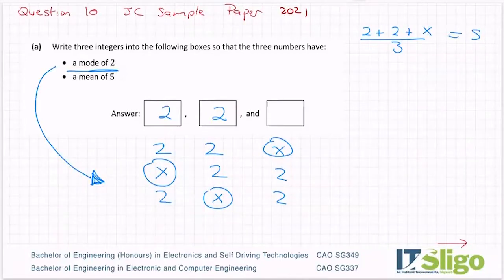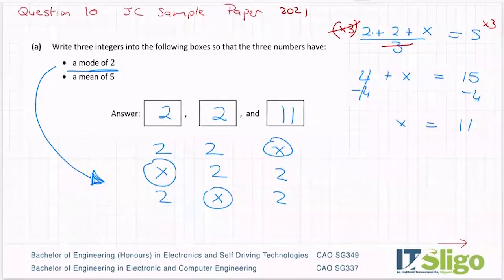Because that's going to tell me what my third number is. So to solve it, I want to get rid of this three on the bottom. So multiply both sides by three. So it cancels on that side. So now I have two and two, if that's okay, I'll add them to give me four plus x is equal to 15. Subtract the four from both sides, x is equal to 11.